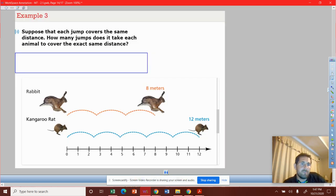Example three now. Suppose that each jump covers the same distance. How many jumps does it take each animal to cover the exact same distance?